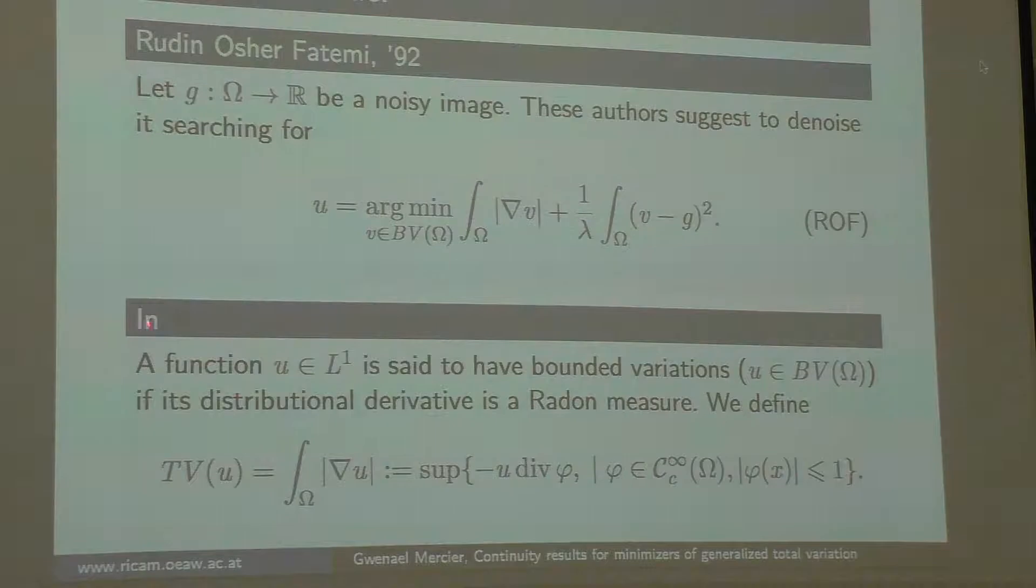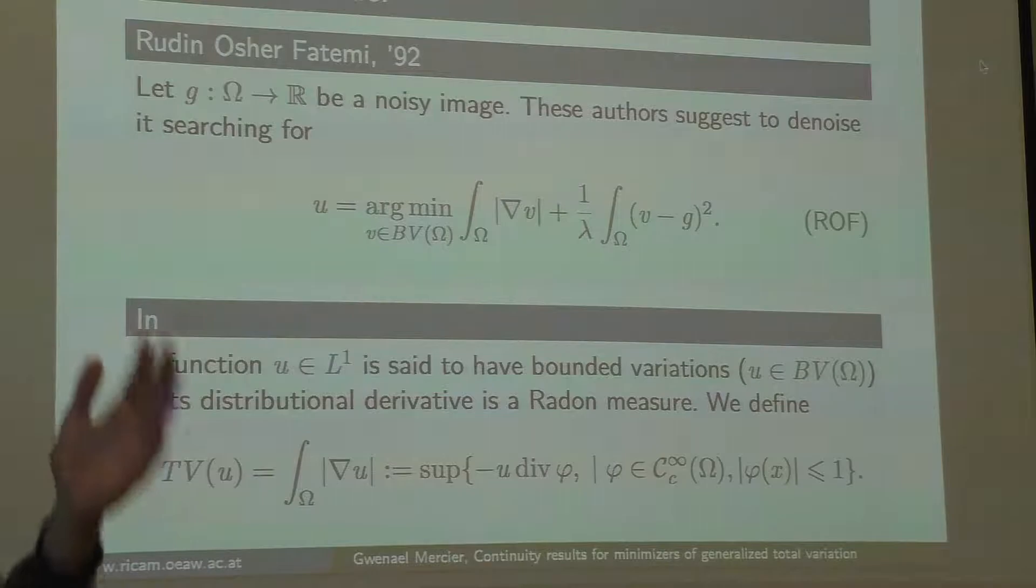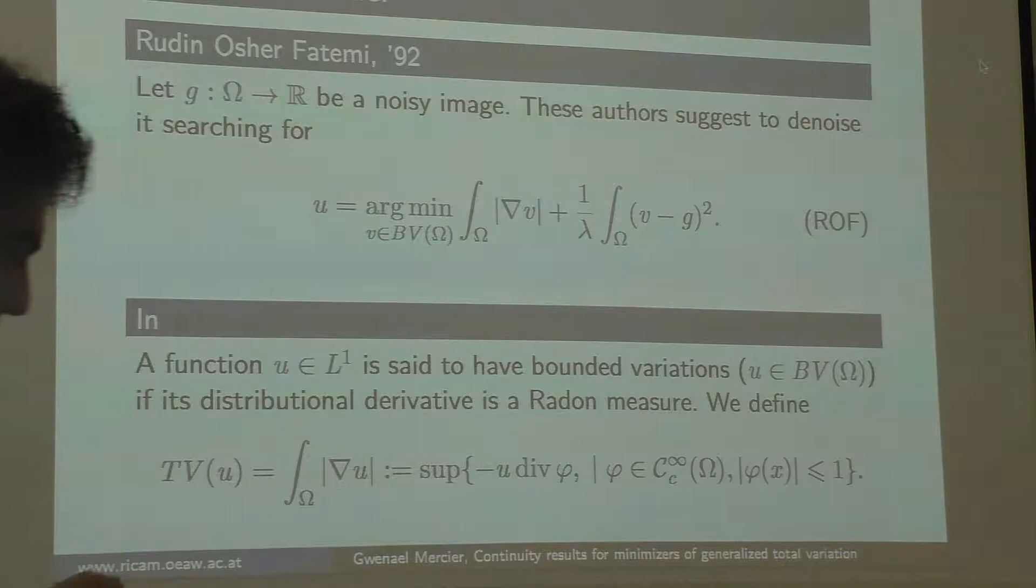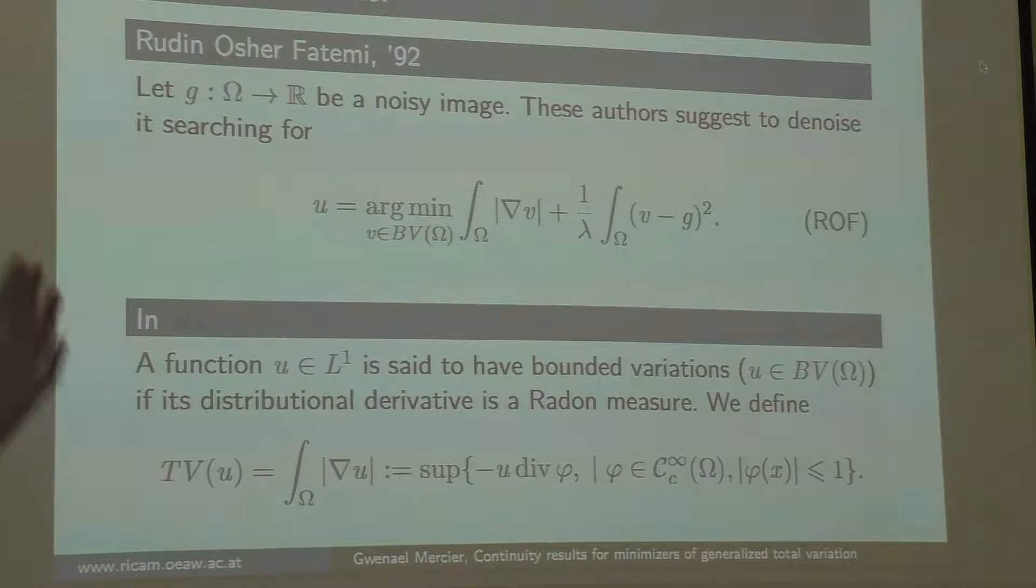So you will minimize in the space of bounded variation functions. What is such a function? A function in L1 is said to have bounded variation if its derivative is a Radon measure. Here you have a duality formula. Just think, if you're not used to it, of the L1 norm of the gradient, but you have to know that it allows discontinuities.